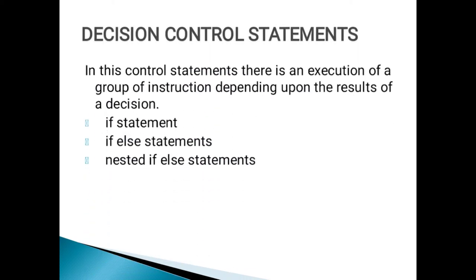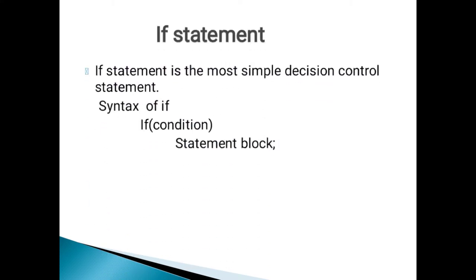The first one is Decision Control Statements. In these control statements, there is an execution of a group of instructions depending upon the result of a decision. When we execute a group of statements, we make a decision according to our conditions. There are three types of decision control statements: if statement, if-else statement, and nested if-else. The if statement is the most simple decision control statement. We first check a condition, then the statement block is executed.